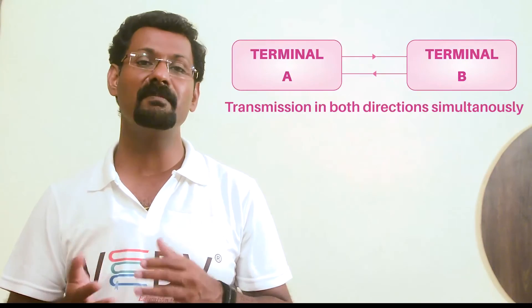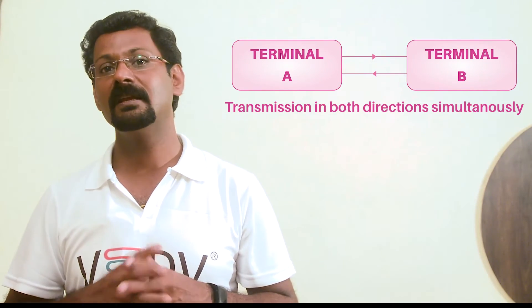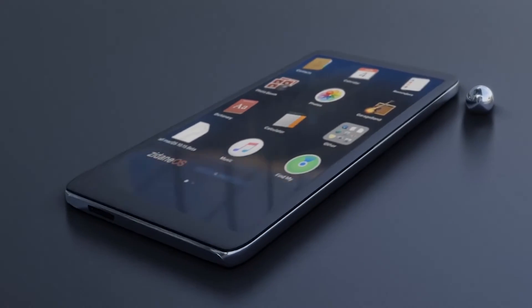Full duplex: in full duplex mode, data can be transmitted and received at the same time simultaneously. Examples of full duplex communication include telephone and video conferencing.